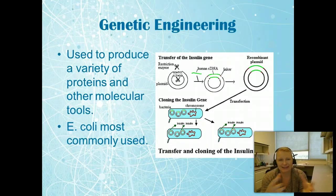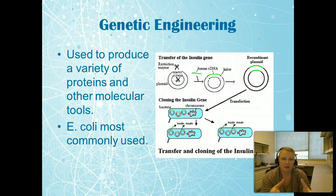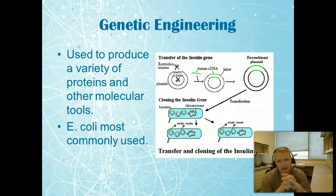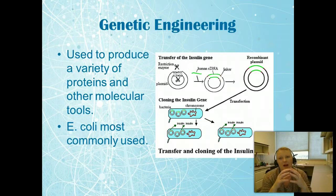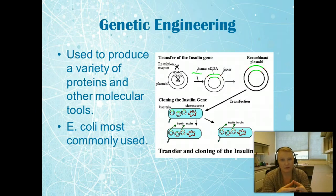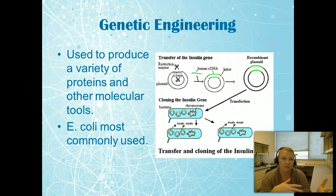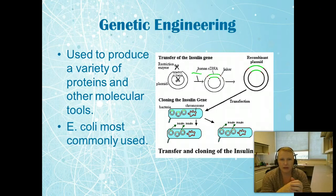One last thing, and this kind of circles back to everything we've been talking about, is genetic engineering. Genetic engineering is the key to anything else that we do. It helps us produce a variety of proteins and other molecular tools. We use E. coli a lot because E. coli grows fast, we don't have to worry too much about contamination. But it's important to recognize E. coli is not the best answer for everything.